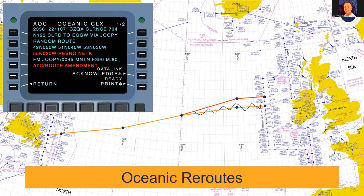Remember, even though I'm showing this in ACARS, it could be done via voice and could occur in other regions as well. In this particular instance, the format used by the North Atlantic flight information regions instructs us that a reroute is part of the clearance, informing us that we need to read it carefully. We've highlighted the changed points in red — on your actual screen, they wouldn't be in red, so without highlighting it could easily be missed.